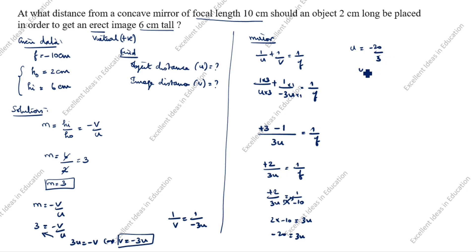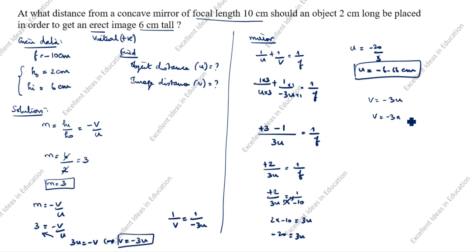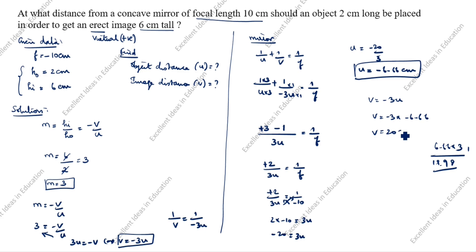So u = minus 20 / 3 = minus 6.66 centimeter. Now for v: v = minus 3u = minus 3 × (minus 6.66) = 3 × 6.66. Calculating: 6 × 3 = 18, and 0.66 × 3 ≈ 1.98, so total ≈ 19.98, which rounds to 20 centimeter. Minus × minus = plus, so v = 20 centimeter. We have found both u and v.